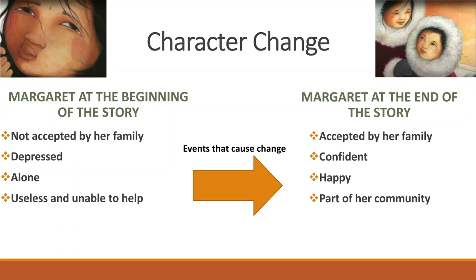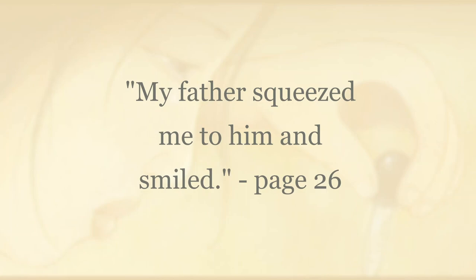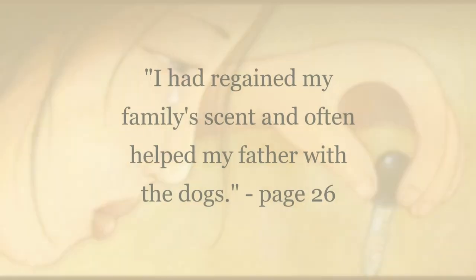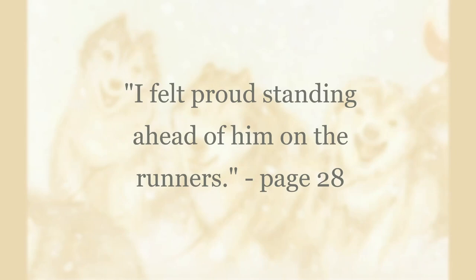The last thing we need to do is figure out what events caused this change in Margaret. Well, the first one seemed to be when she nursed the puppy back to health. Right after that happens, the text says 'my father squeezed me to him and smiled.' The text also says 'I had regained my family's scent and often helped my father with the dogs.' The other event seems to be when Margaret starts riding the sled dogs with her dad. After that happens, the text says that Margaret felt proud of herself and it also says that her father was proud of her too.